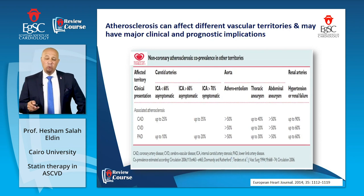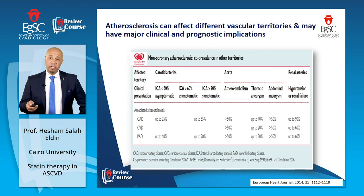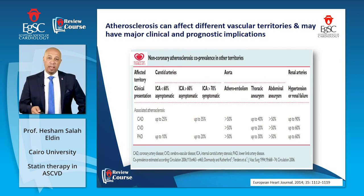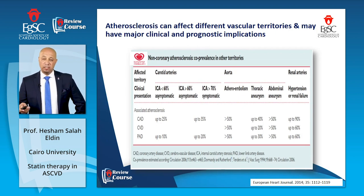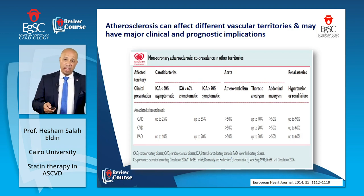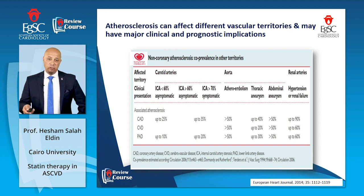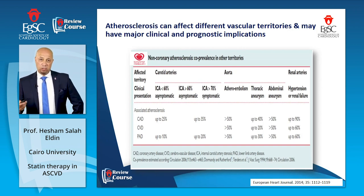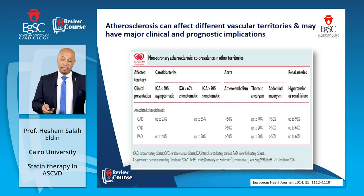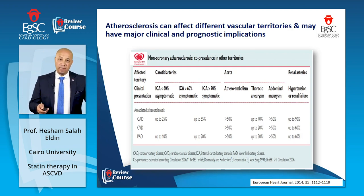If you're having atherosclerosis in one vascular bed, you may have some other vascular beds involved as well. That's why assessment for an abdominal aortic aneurysm or thoracic aneurysm with atherosclerotic involvement of such vascular bed also requires assessing the coronary circulation.